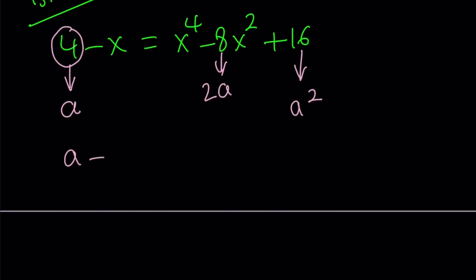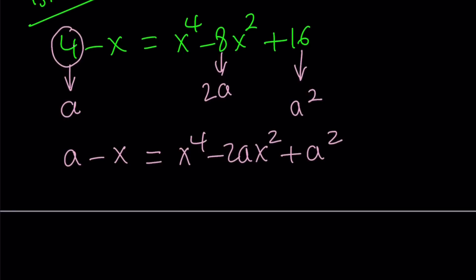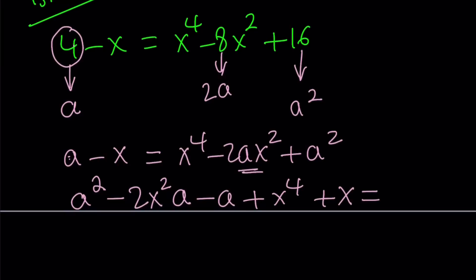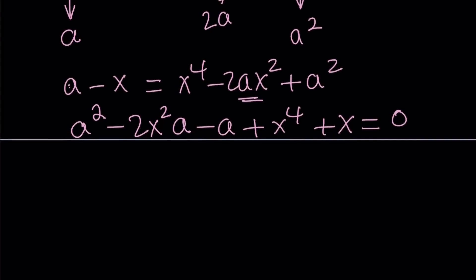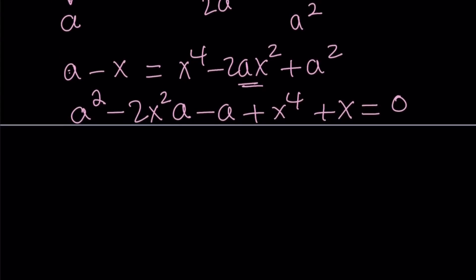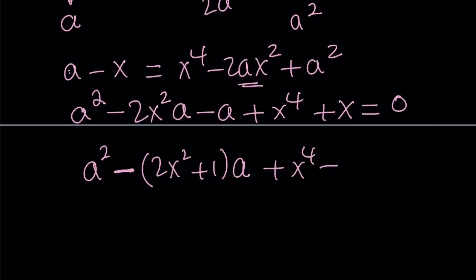Now let's rewrite it with the new variable: a minus x equals x to the fourth minus 2a·x squared plus a squared. Notice that this is quartic in x but quadratic in a — that is the idea. So let's put everything together and make it a quadratic in a. We have a squared minus 2x squared·a, and then bringing the a over gives a coefficient of minus (2x squared plus 1) for a, and x to the fourth plus x as the constant term. Since a is the main variable here, x will be considered a constant, and I'm going to solve this as a quadratic equation.